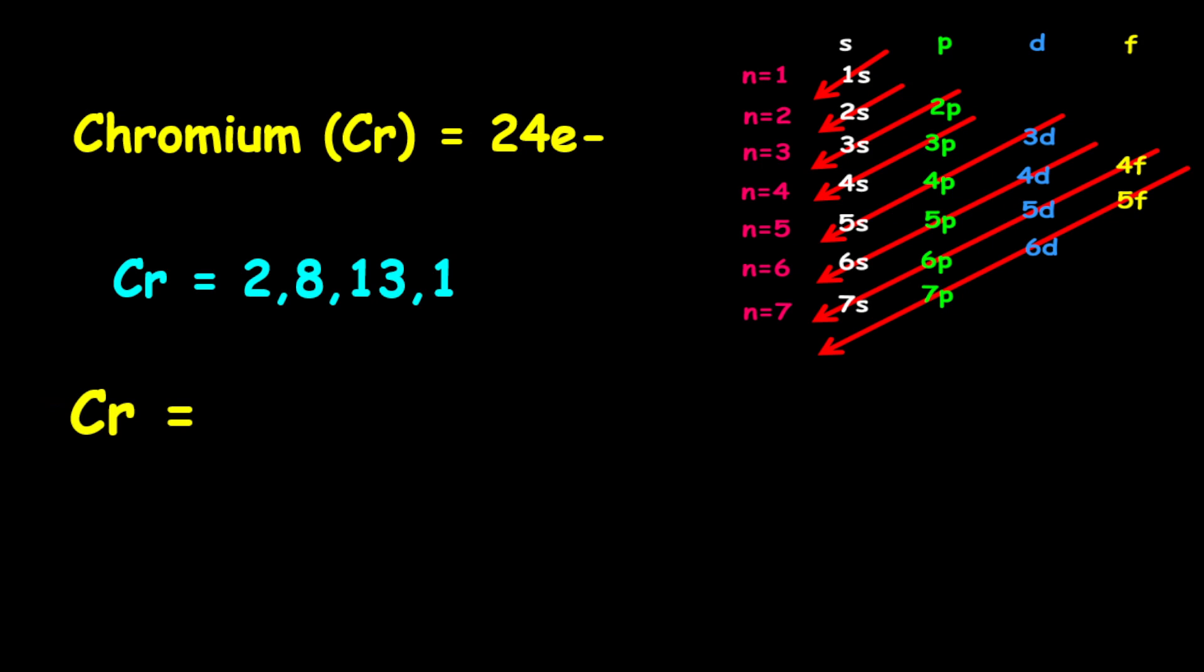Now, let us look at the orbital filling electron configuration. Hence, we start with 1s2, followed by 2s2, then we have 2p6, followed by 3s2, then we have 3p6, and now we have our 4s1.